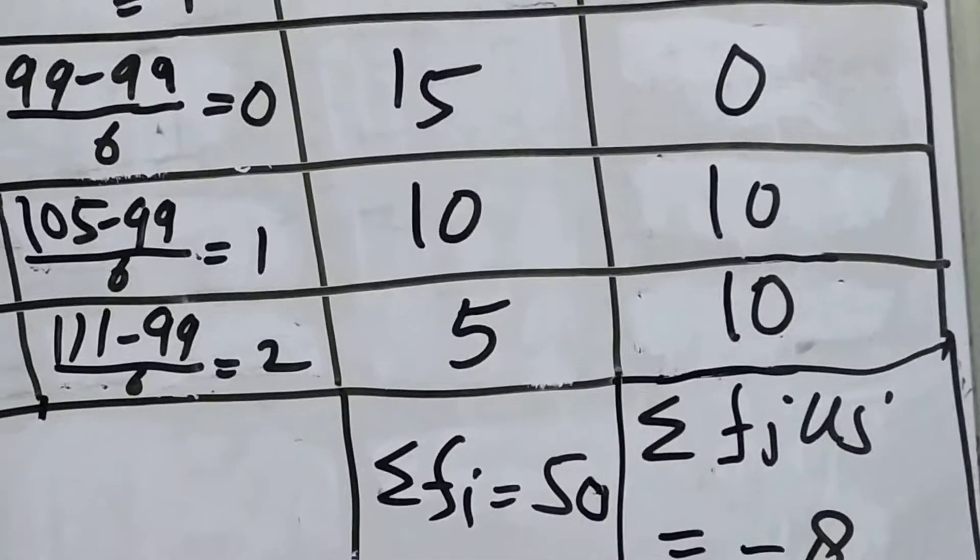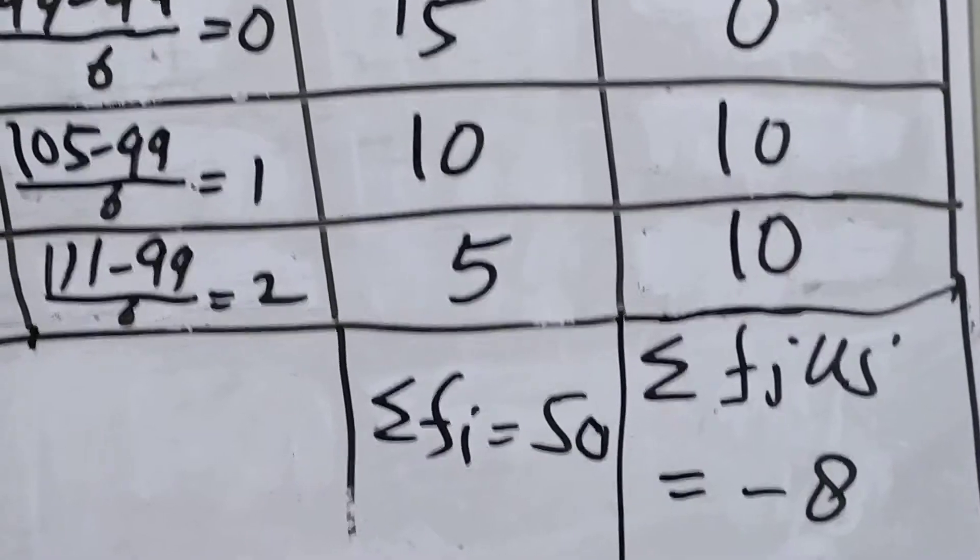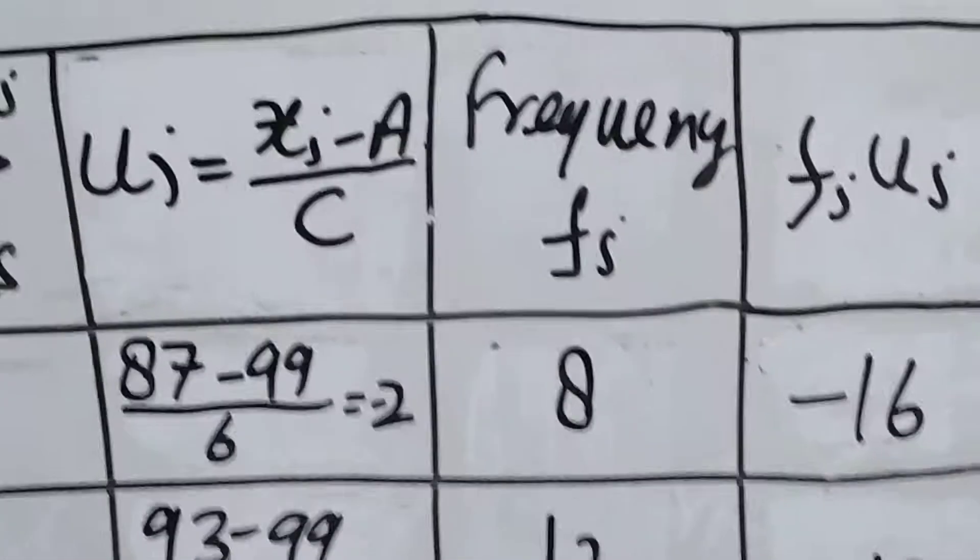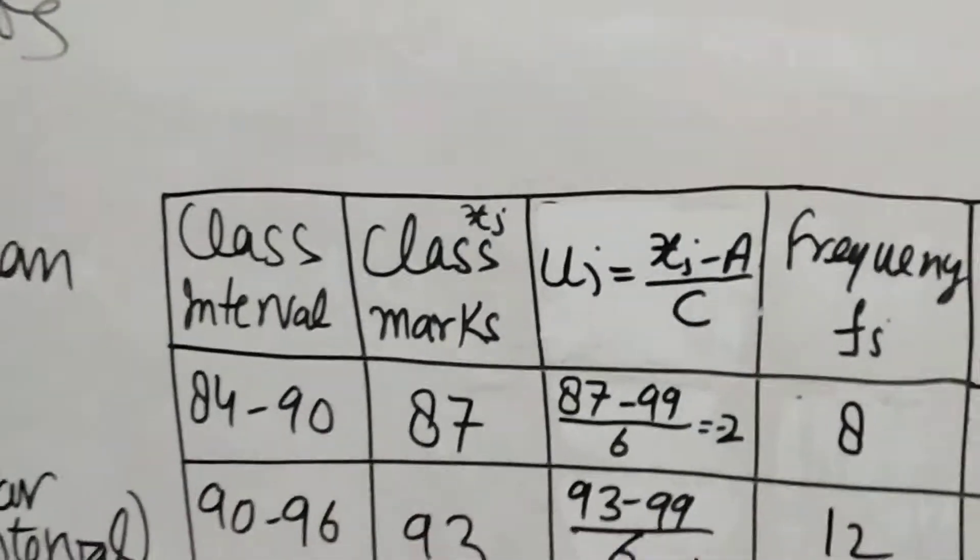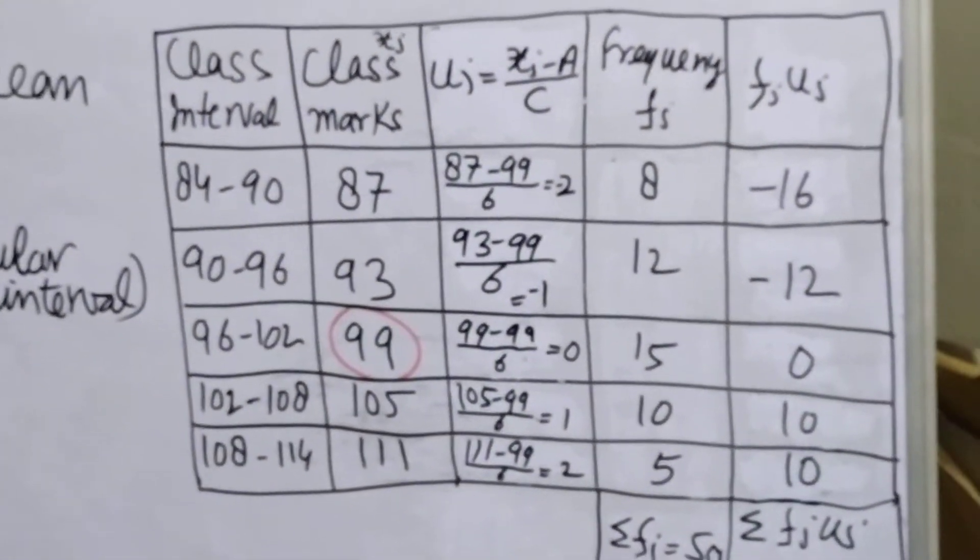Now we have calculated sigma fi and sigma fi ui. The addition of all the values in respective columns. You can visualize this table and note down all the values.